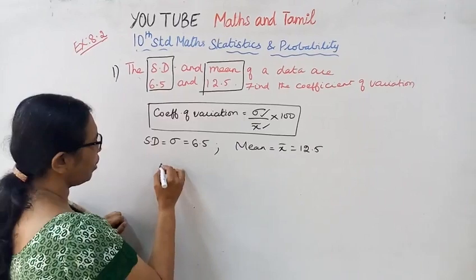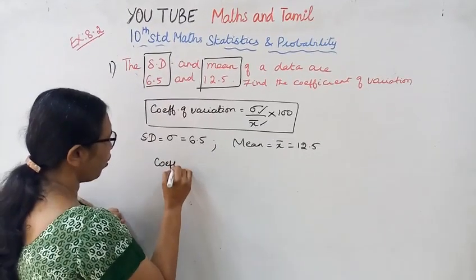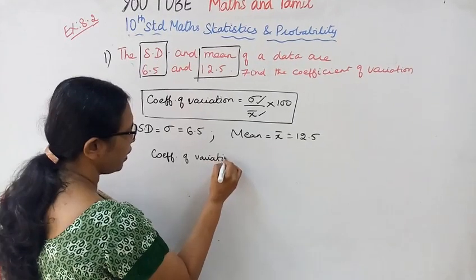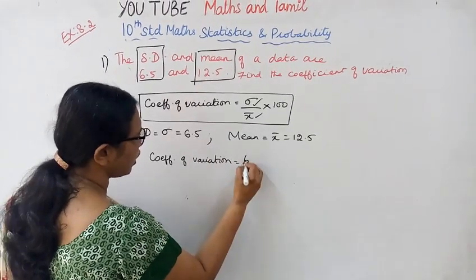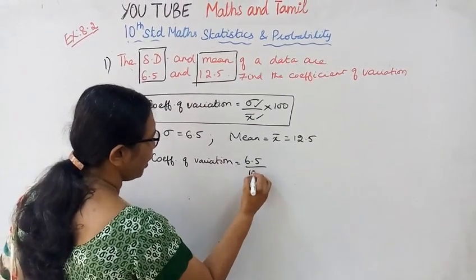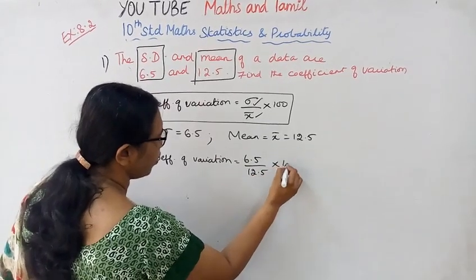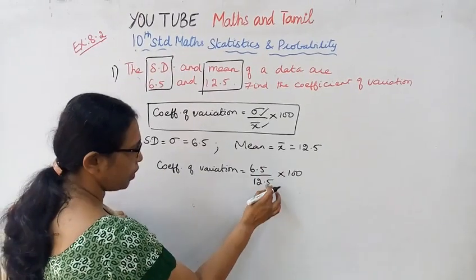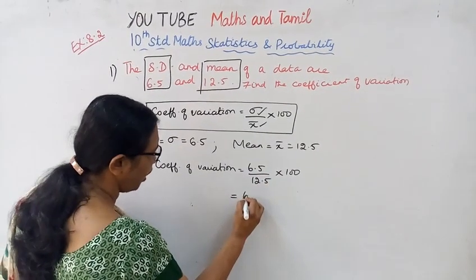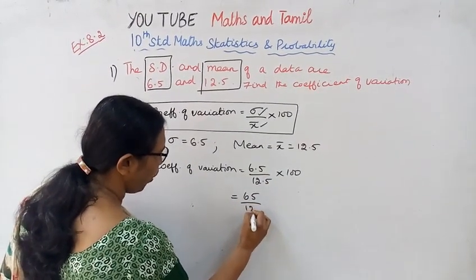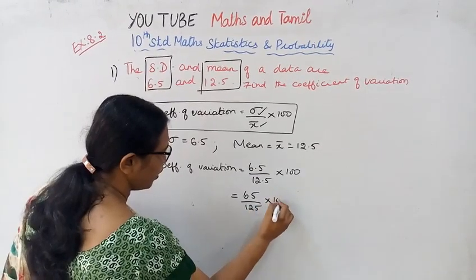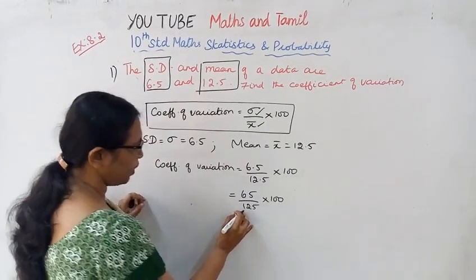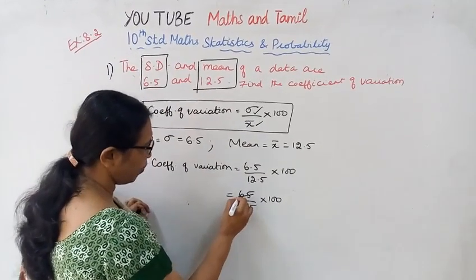Now, the coefficient of variation equals 6.5 by 12.5 into 100. That is 65 by 125 into 100. Five into 25 will cancel.